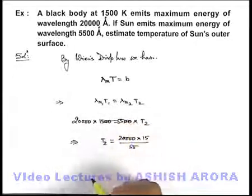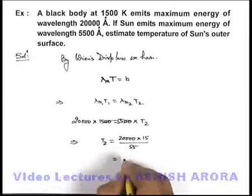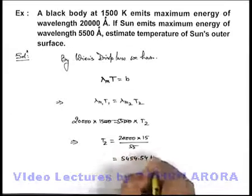As here, these zeros get cancelled out, directly on simplifying the result we'll write 5454.54 Kelvin.